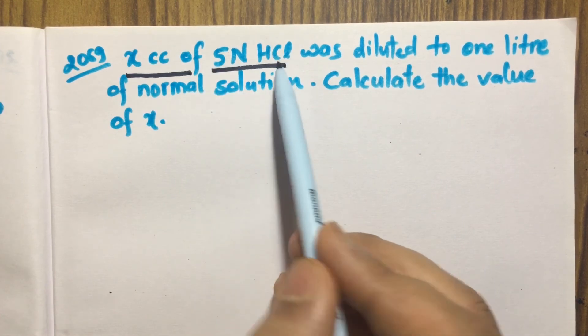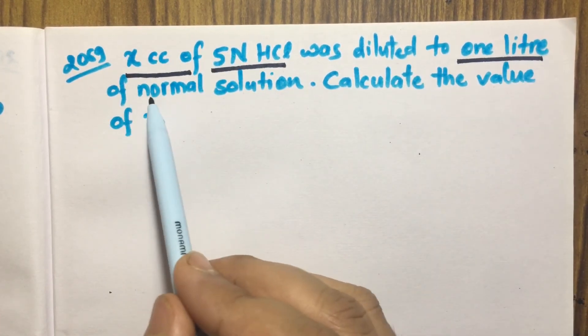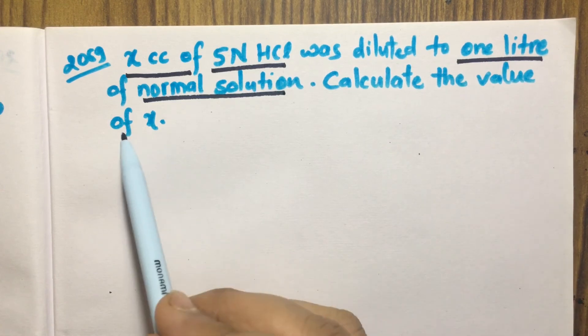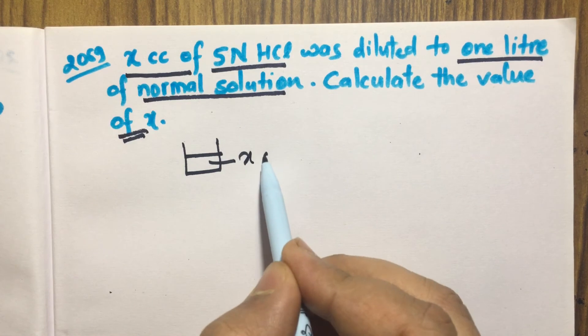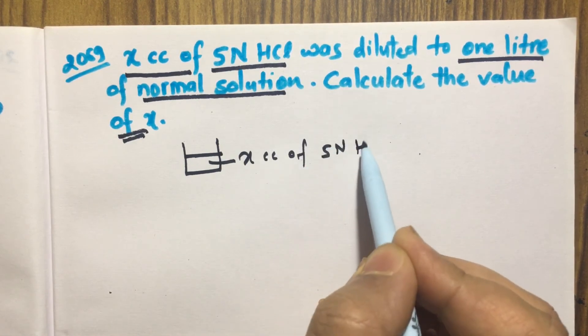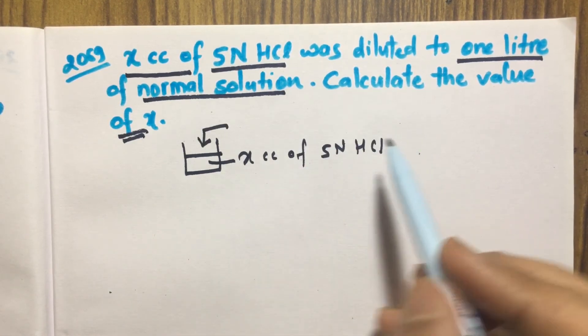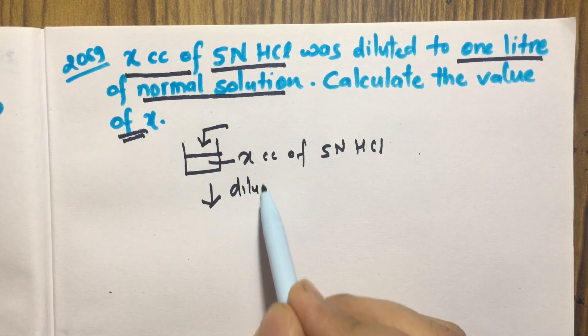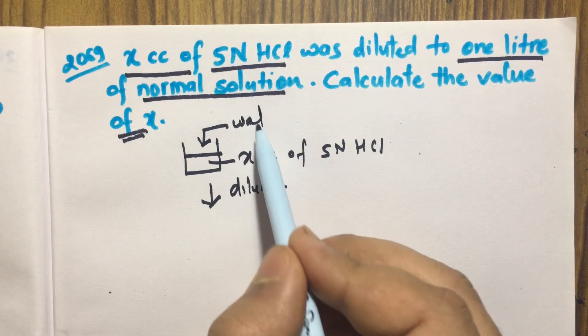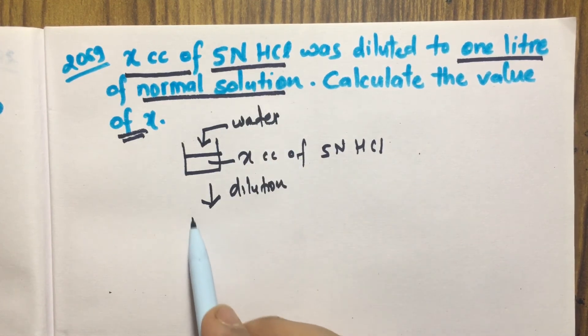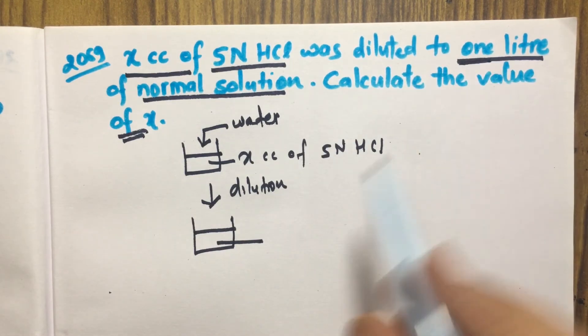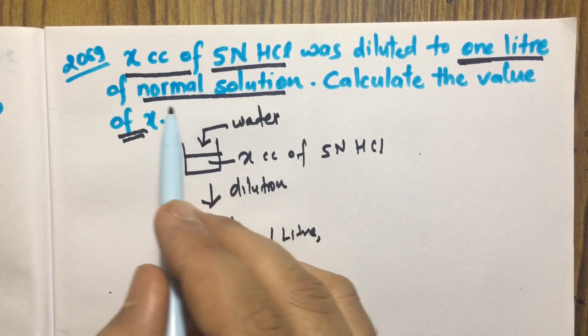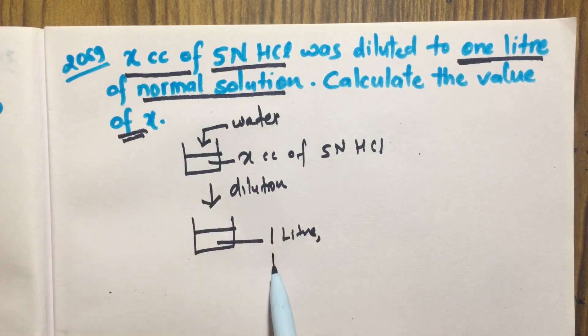X cc of 5N HCl was diluted to one liter of normal solution. Calculate the value of X. Here X cc of 5N HCl is to be diluted, so after dilution by adding water, the volume of solution becomes one liter and the concentration becomes normal solution, that is 1N normal solution.